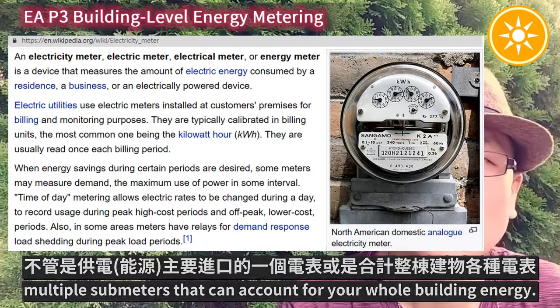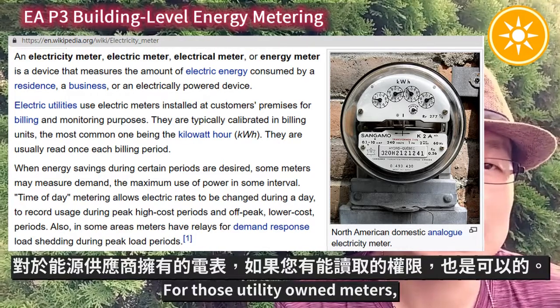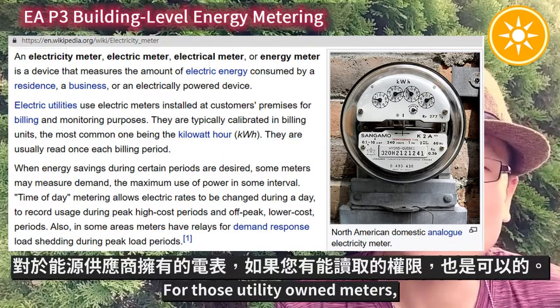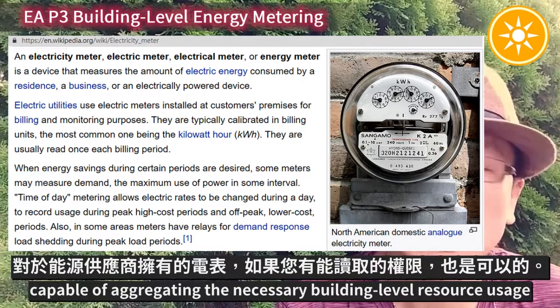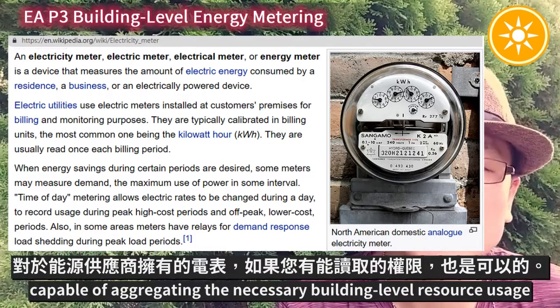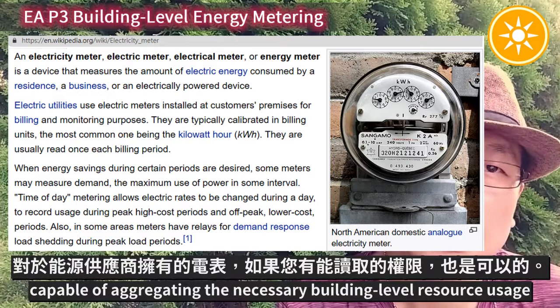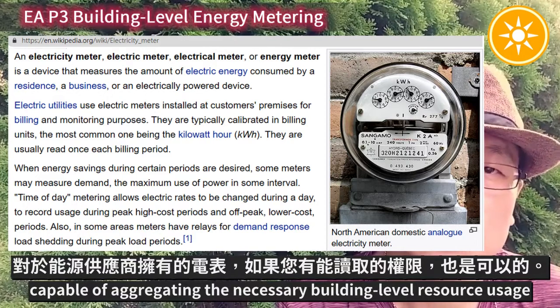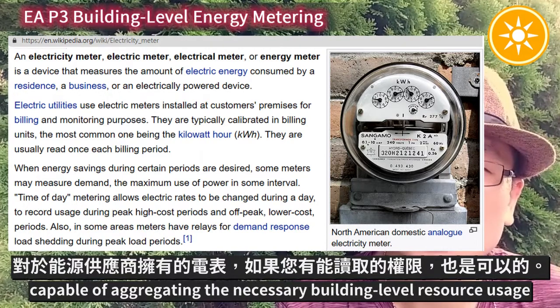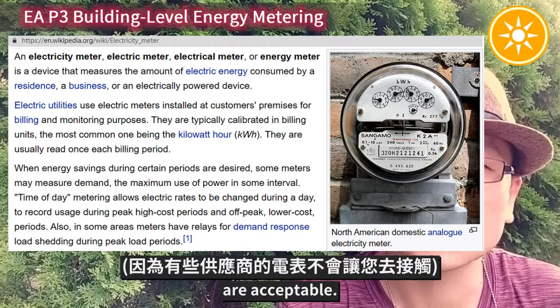Either install a single meter at the utility entrance or multiple submeters that can account for your whole building energy. For those utility-owned meters capable of aggregating the necessary building level resource usage are also acceptable.